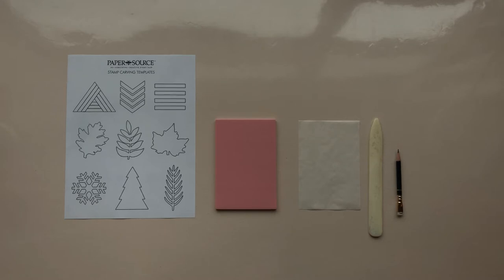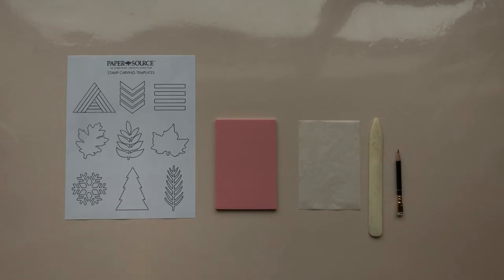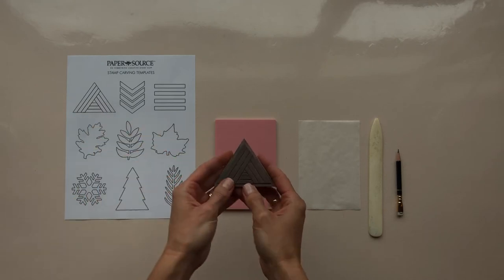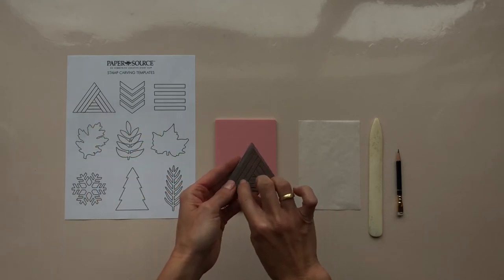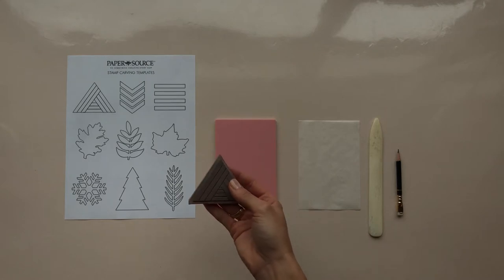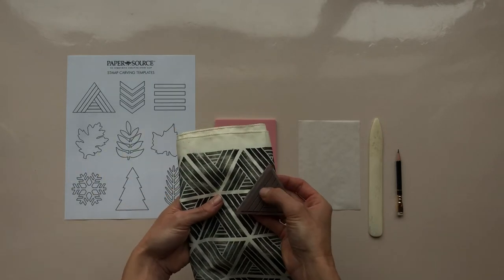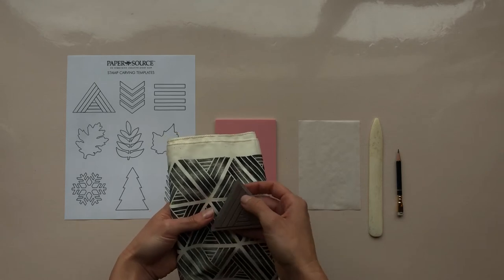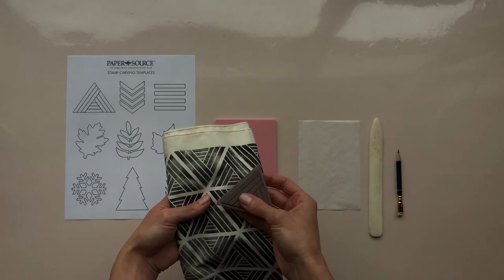One thing to keep in mind as you're drawing or tracing your design is any line that you carve out, so for example with this one here, these lines I carved out that's going to be where the fabric or material underneath shows through. So the raised areas is what's going to get the ink and what will show up in your pattern and then anything you carve away will be negative space.